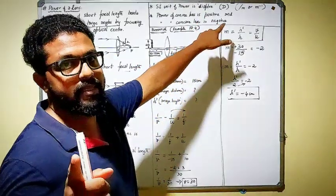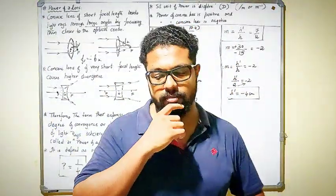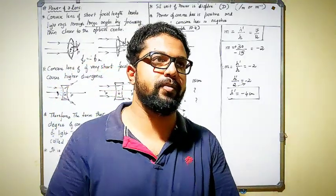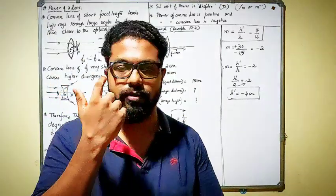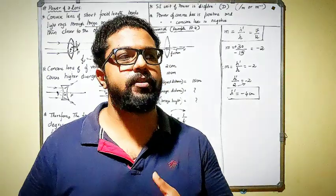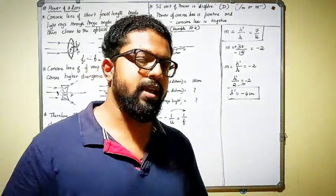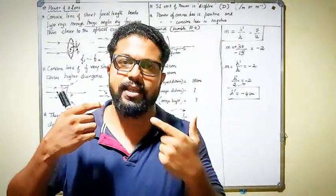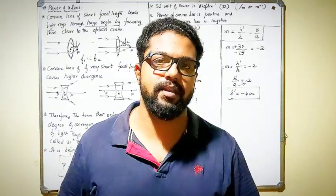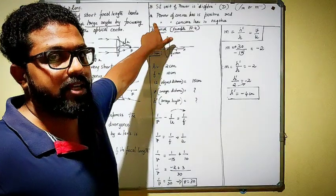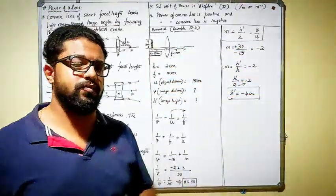The power of a convex lens is always positive, whereas the power of a concave lens is negative. You might have heard people say their glass power is minus 2.5 or minus 1.5 — the minus means they are using a concave lens, which means they cannot see farther objects clearly. I will cover far-sightedness and near-sightedness in the next chapter. Remember: power of a convex lens is positive, power of a concave lens is negative.